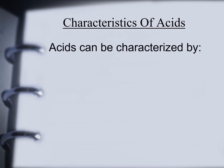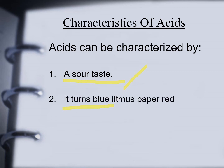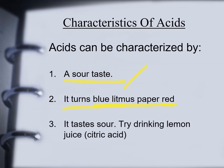Characteristics of an acid: acids can be characterized by a sour taste — try drinking lemon, which contains citric acid. Also, acids turn blue litmus paper to red. When you add blue litmus paper into an acidic solution, that blue litmus paper will turn red.